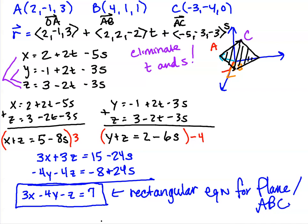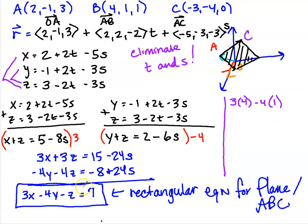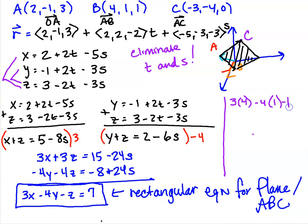That was way easier than Diophantine equations. To verify, plug in point B = (4, 1, 1): 3(4) − 4(1) − 1 = 12 − 4 − 1 = 7. It checks out. You could verify all three points with a calculator quickly. So we now have the vector equation, the parametric equations, and the rectangular equation for the plane.